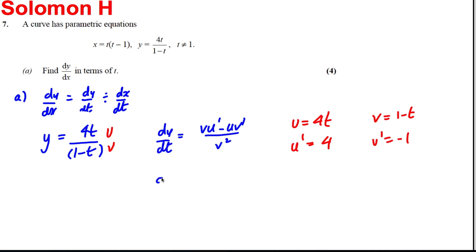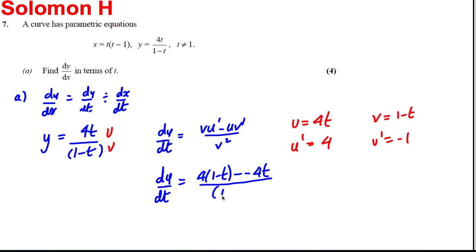Applying the formula, dy by dt is v·u' minus u·v' over v squared: that's 4(1 subtract t) minus 4t, all over (1 subtract t) squared. Tidying this up, you get 4 subtract 4t plus 4t, giving 4 over (1 subtract t) squared. That's my dy by dt.